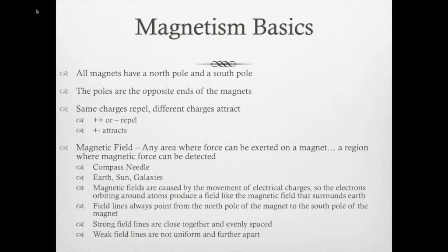Any place that we have a force that is exerted on a magnet, or a region where magnetic force can be detected, this is the magnetic field. We have magnetic fields all over the place. First of all is your compass needle. If a compass needle is deflected when it's put in a particular location, then we say that a magnetic field exists at that point. And the strength of the field is measured by the strength of the force on the compass needle.